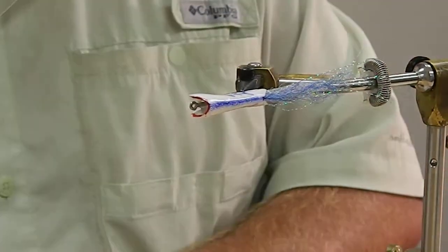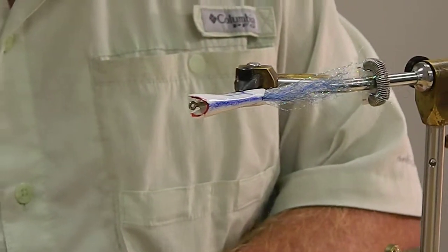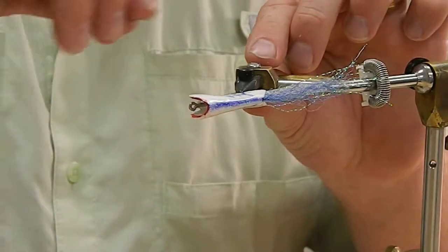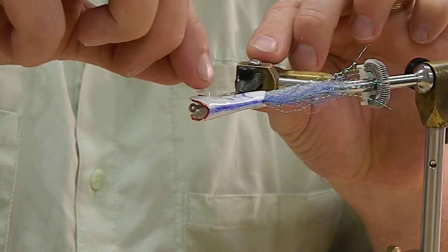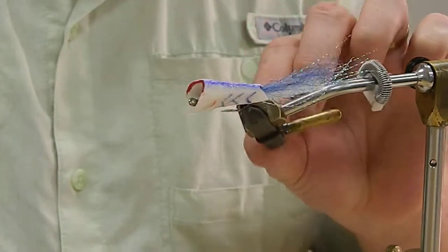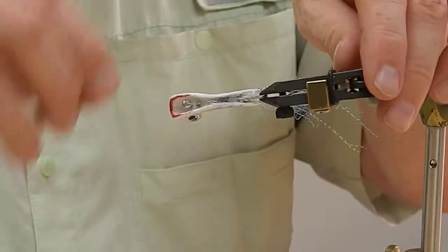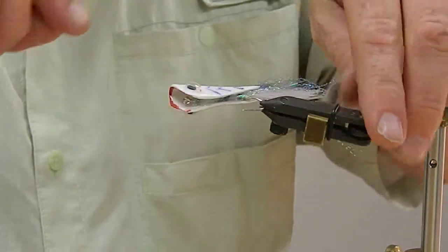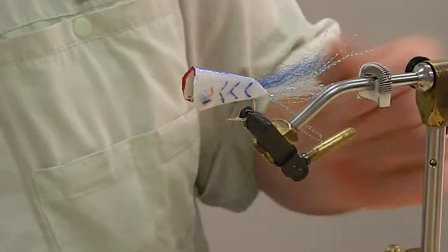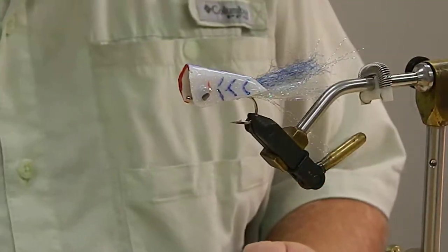And my epoxy is starting to tack up just a little bit. Should be tacky enough to put on the wobbly eyes. These are 7mm wobbly eyes, and that will aid in it, makes it look better. Like so. And that is the crease fly.